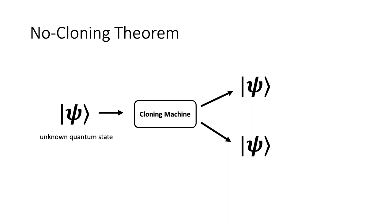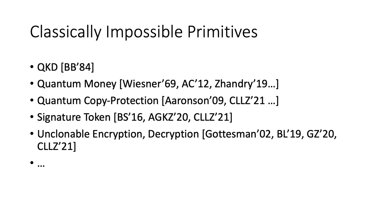As is well known, there's a famous theorem in quantum information that says when given an arbitrary unknown quantum state, there's no procedure to turn this state into two copies that are both the same as the original one. This principle has inspired many constructions of classically impossible primitives, because classical information can always be cloned, and these are one of the major applications of cryptography using quantum information.